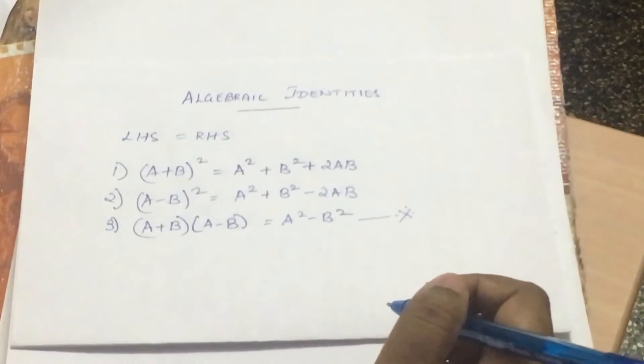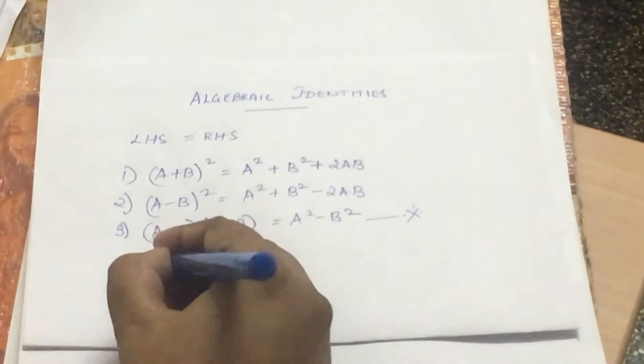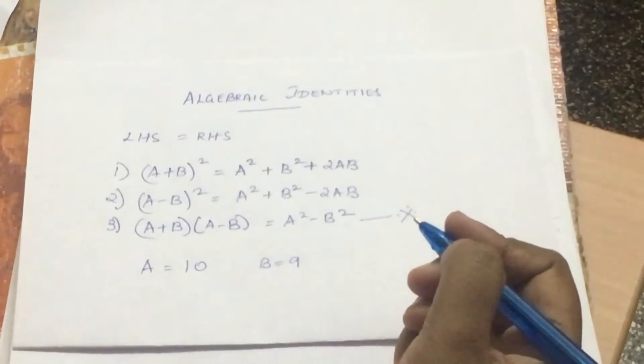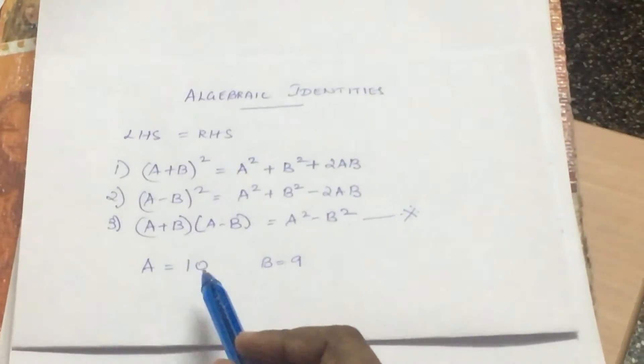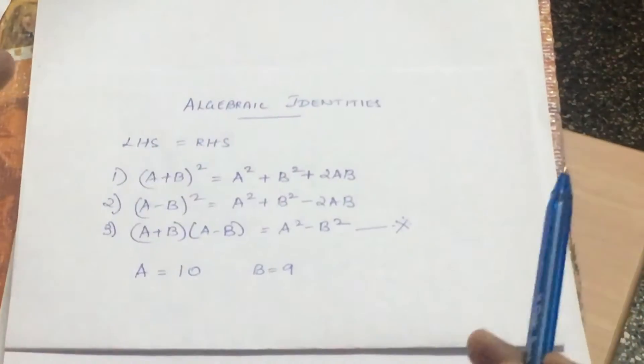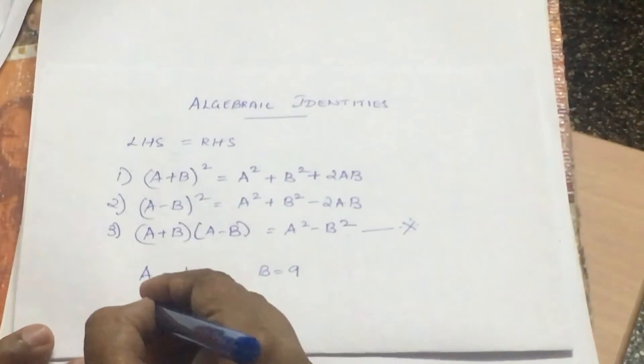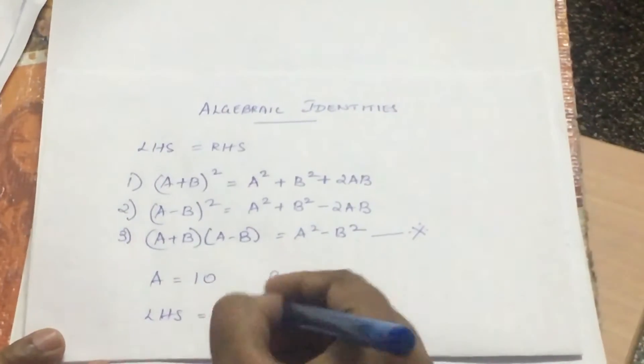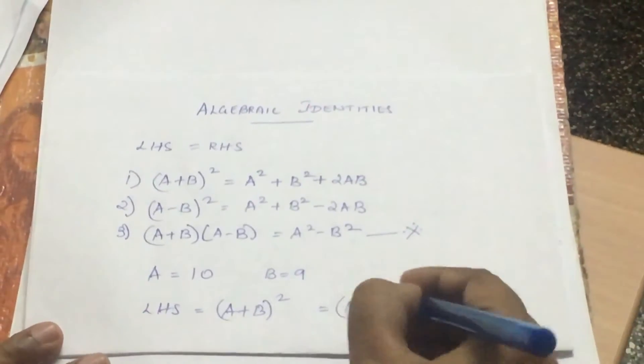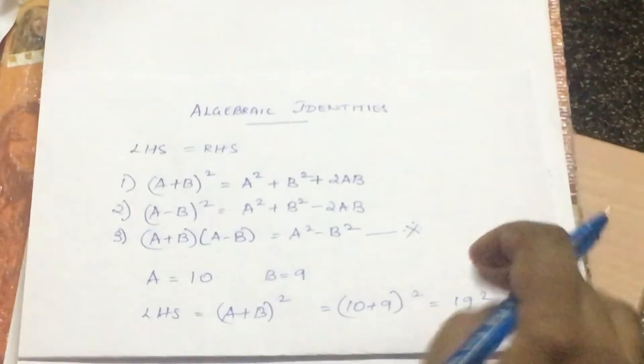Let me start with the demonstration. Let us assume that a takes a value 10 and b takes a value 9. And what we are trying to do here is we are going to prove that (a+b)² is equal to a² + b² + 2ab done separately. First on the LHS, we have (a+b)² and that is (10+9)² which is 19². And that gives me a value of 361. So my LHS is equal to 361.